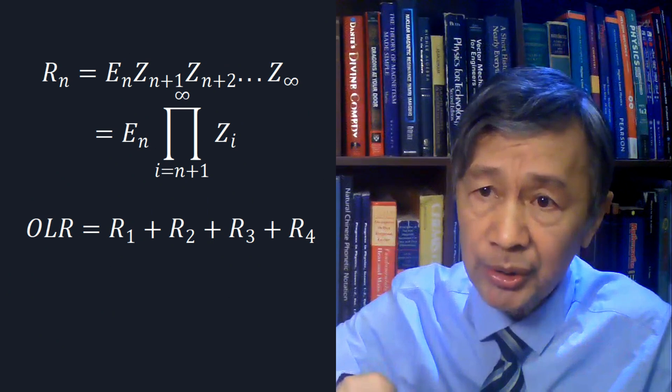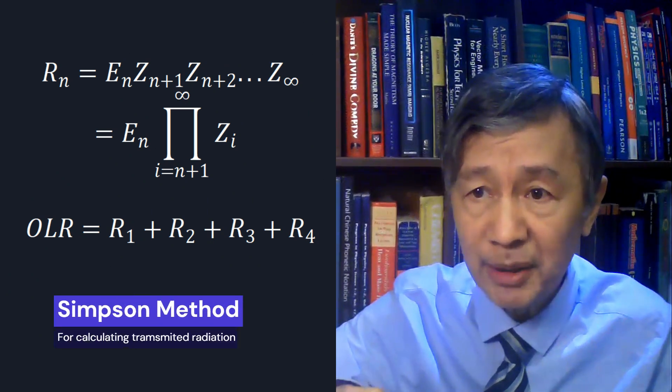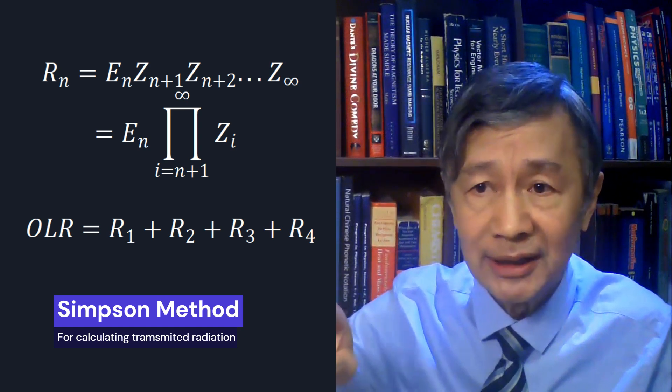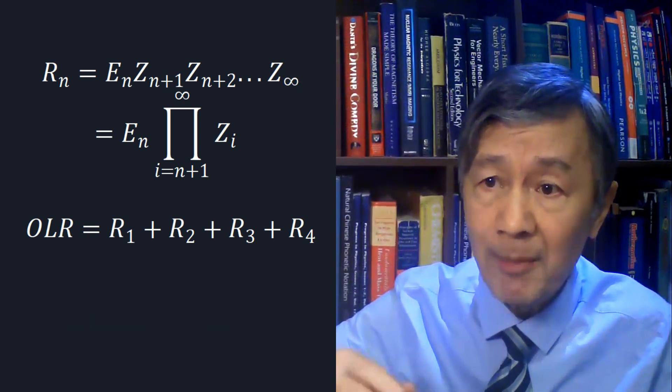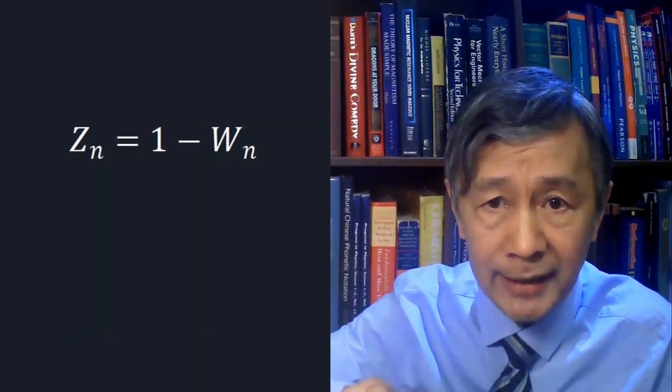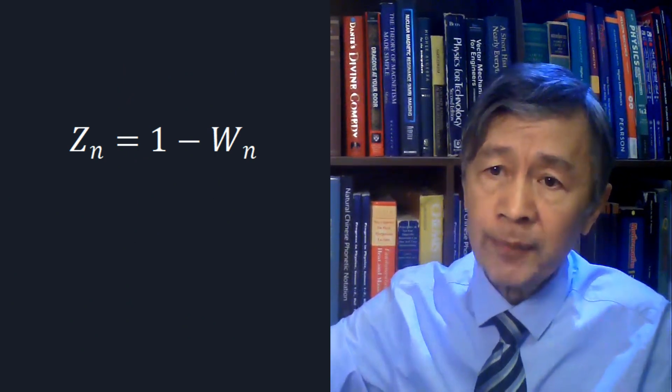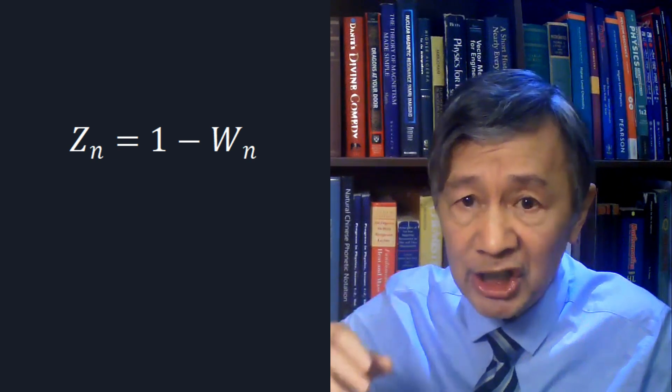Simpson solved this problem by multiplying the emission by each layer by a product of transmittance factors, in a similar way to how one formulates a general term in a geometric sequence, as you did in high school. Namely, R_n equals E_n multiplied by T_(n+1), T_(n+2), and so on until the last layer. Although the transmittance for each layer T_n varies as the water vapor amount or the humidity does, a simple equation can be used: transmittance equals 1 minus absorptivity. In this way, transmittance can be expressed in terms of humidity too.